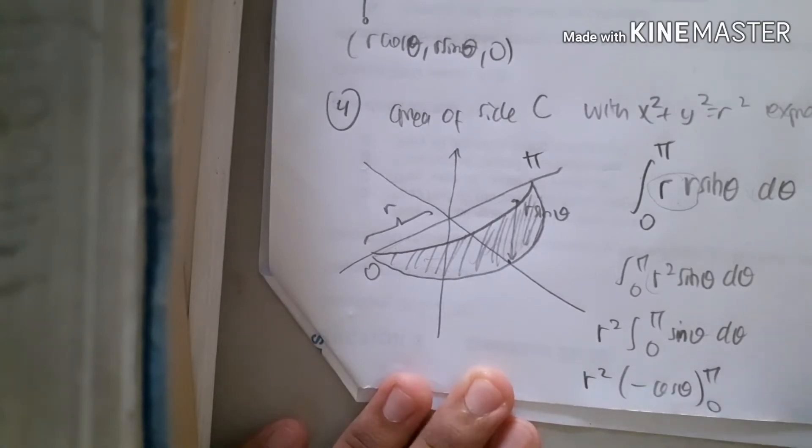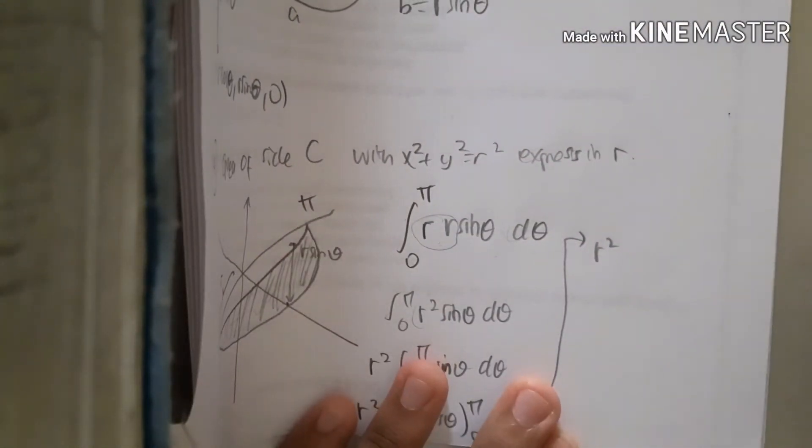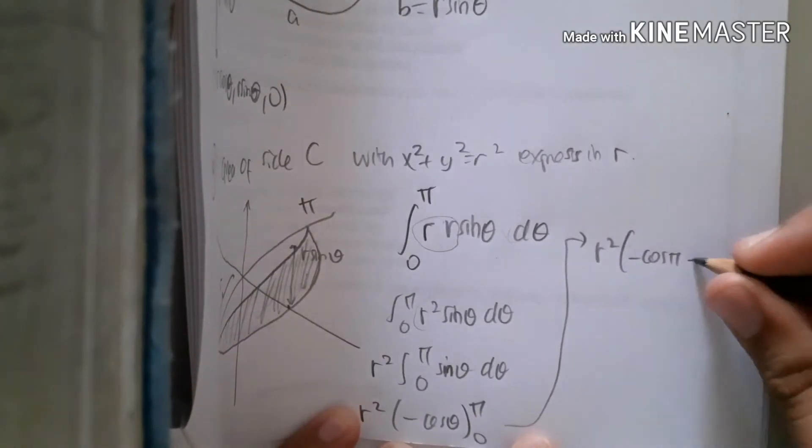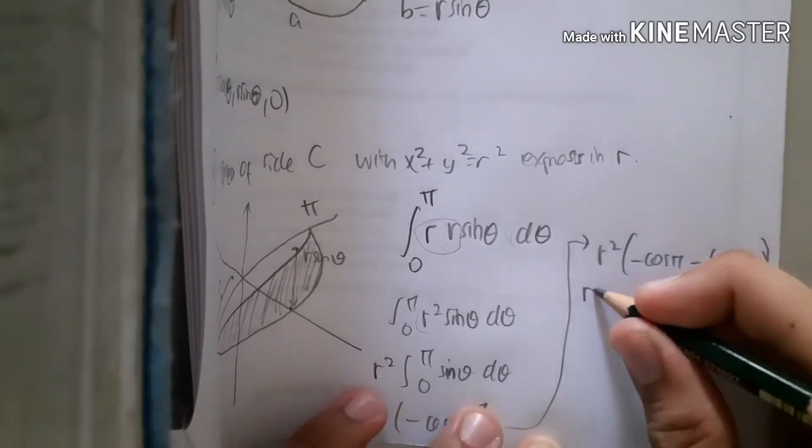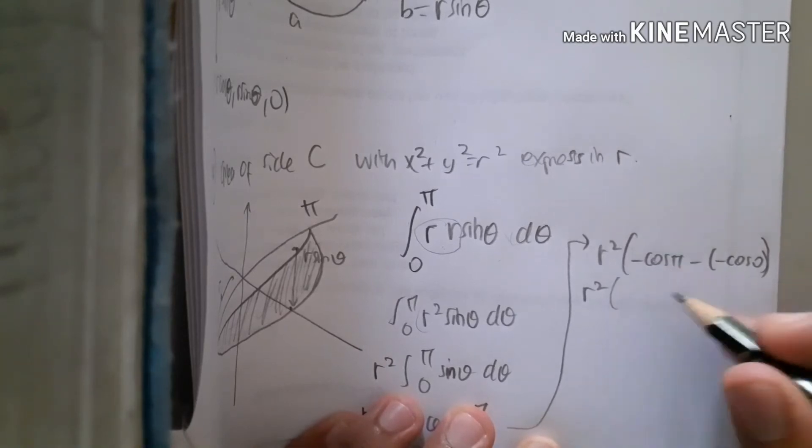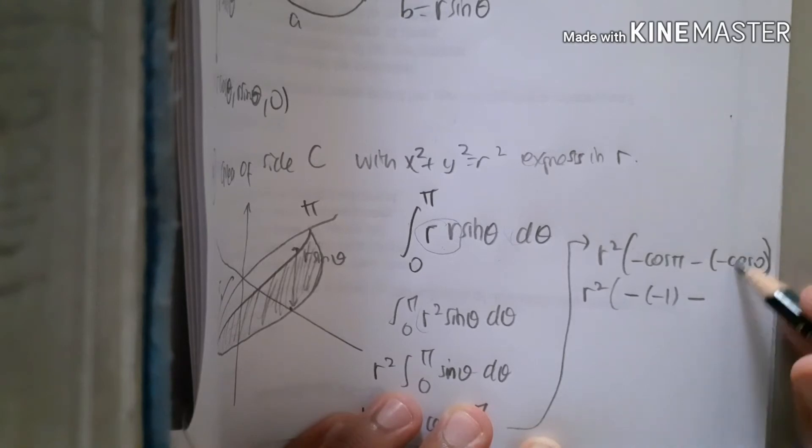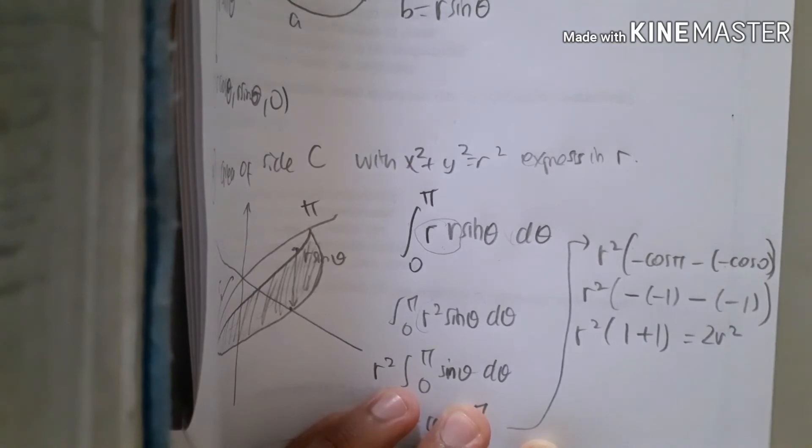From the limit of π to zero. And we just calculate this. Remember how to do the definite integral of this one. So R², and then minus cos π minus minus cos zero. Okay, what is cos π? Cos π is minus one. Okay, minus minus minus one, minus cos zero is minus one. I mean, minus cos zero is minus one. So R² times one plus one, it is 2R². So that is, guys, the solution for part two.